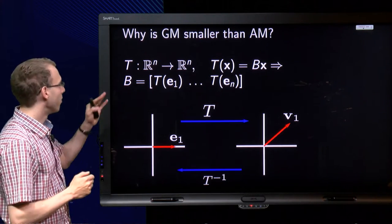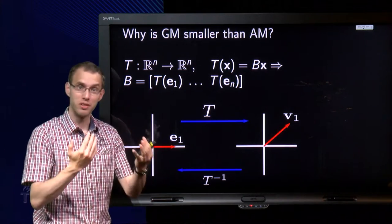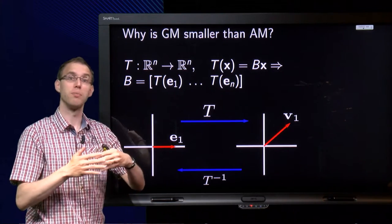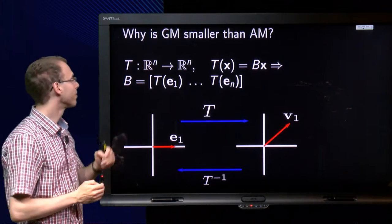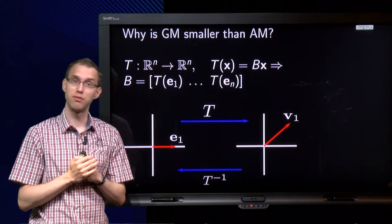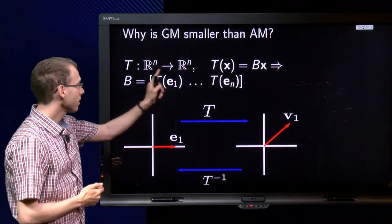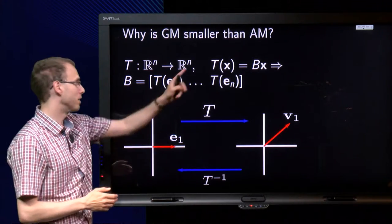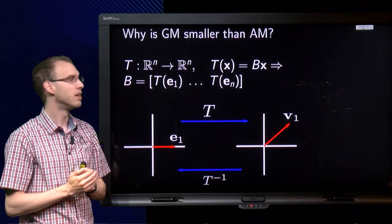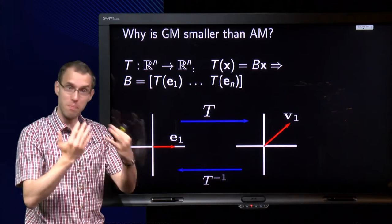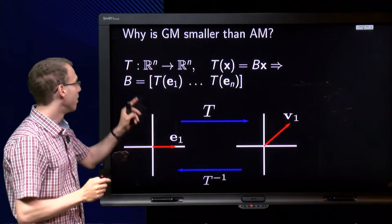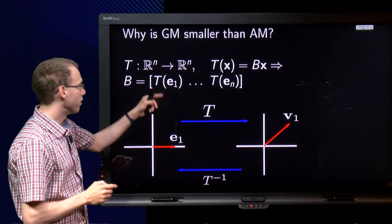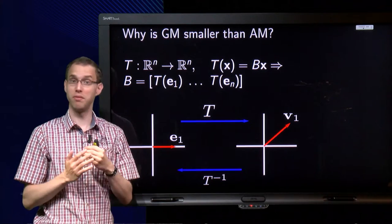For that, we first need to make a small detour to the paragraph about linear transformations. If you have a transformation from Rn to Rn, you know that this linear transformation can be implemented by a matrix B, T(x) equals Bx. And how did you make B, how could you find B? Well, you put B equals [T(e1), T(e2), ... T(en)].